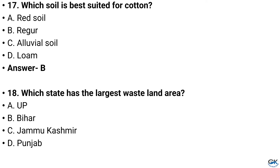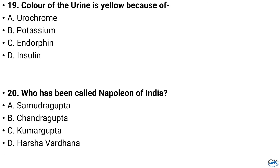Question number 18. Which state has the largest wasteland area? Option A: UP, Option B: Bihar, Option C: Jammu Kashmir, Option D: Punjab. And the answer is Option C: Jammu Kashmir.